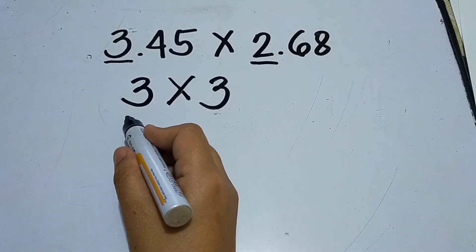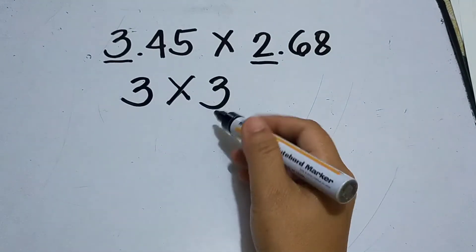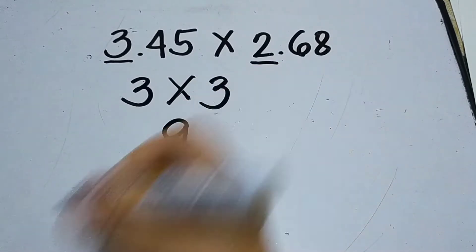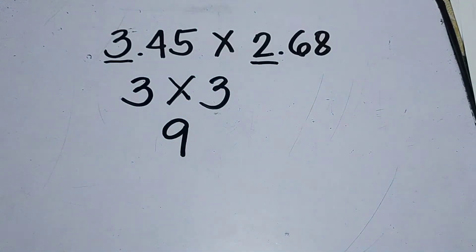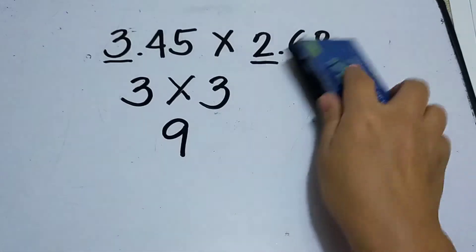Then afterwards you can multiply: three times three is nine. So that means when estimating is the topic, it's much easier to answer or operate. Okay, next.